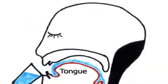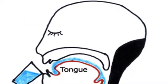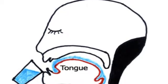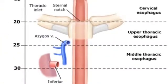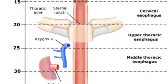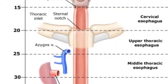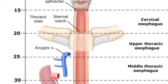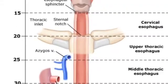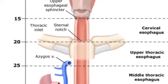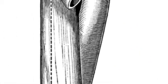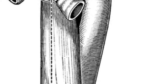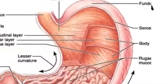The epiglottis is a lid-like flap of flesh that covers the larynx during active swallowing. Peristaltic movement is when muscles contract in a wave-like motion. This is used in the esophagus to ease food down to the stomach. No digestion occurs in the esophagus.